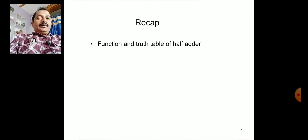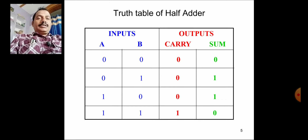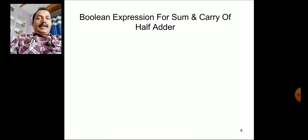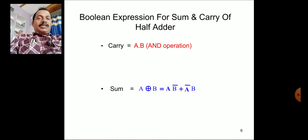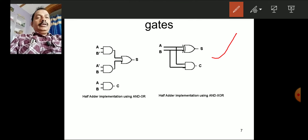Let us review the previous class on the half adder. For 2-bit addition: 0 plus 0 gives sum 0, carry 0; 0 plus 1 gives sum 1, carry 0; 1 plus 0 gives sum 1, carry 0; 1 plus 1 gives sum 0, carry 1. This is the half adder. The sum and carry expressions were written using SOP expressions and implemented with an exclusive-OR gate and an AND gate.